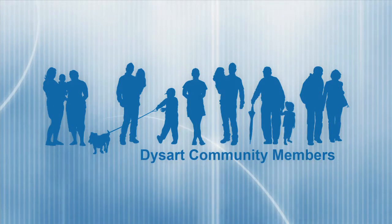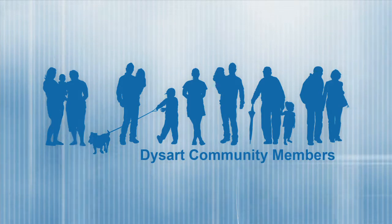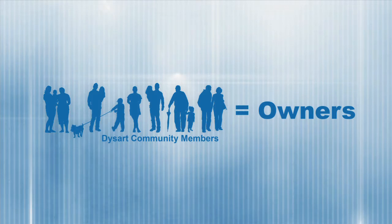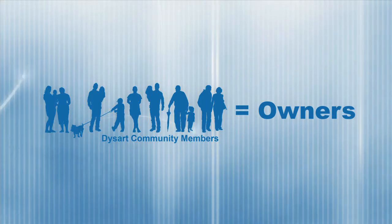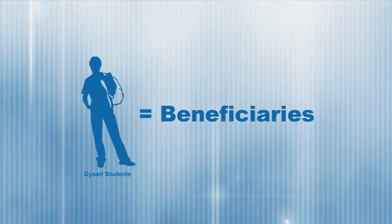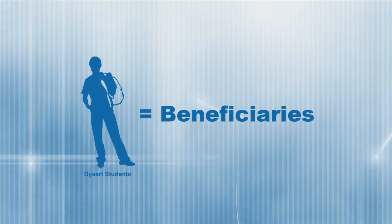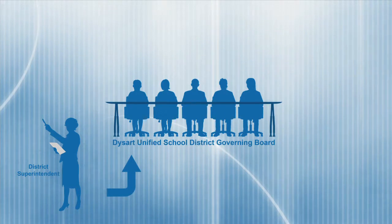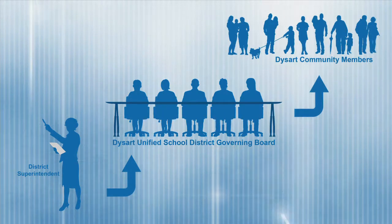The Dysart School District community, including all those living within the district boundaries, serves as the owners — those who have an investment in the success of the Dysart District. The beneficiaries within the model are the students, whose lives benefit from that success. To graphically represent this new hierarchy in policy governance, the superintendent serves the Dysart Unified School District as CEO and reports to the Dysart Governing Board, who ultimately serves the community.